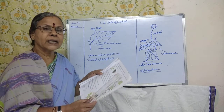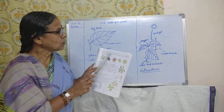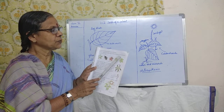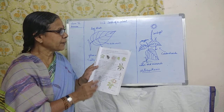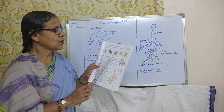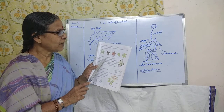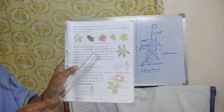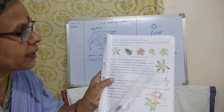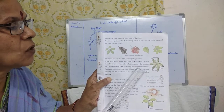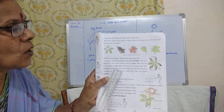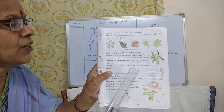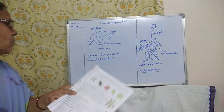Let us now learn about the other parts of the shoot. Walk into a garden and collect as many leaves as you can. Are all the leaves the same size and shape? No. A leaf has a flat and broad part called the leaf blade. The leaf blade has a vein in the middle called the main vein. A number of side veins branch out from the main vein. Veins carry water and minerals within the leaf. There are tiny openings on the underside of each leaf — they are called stomata.